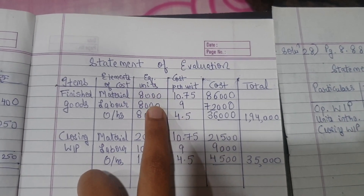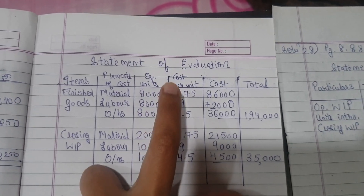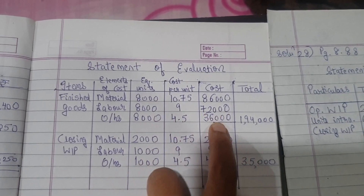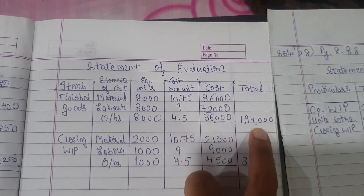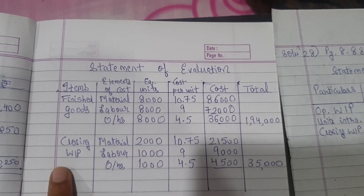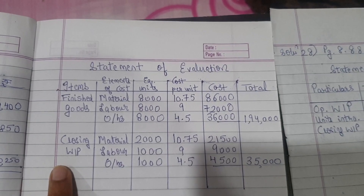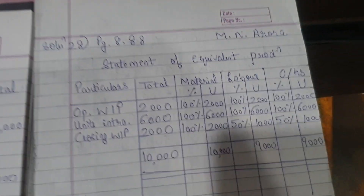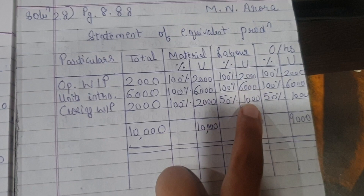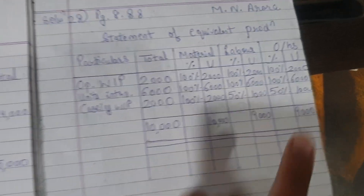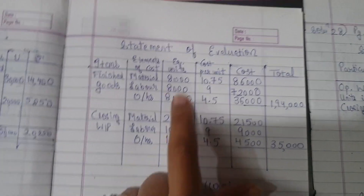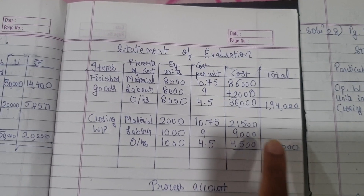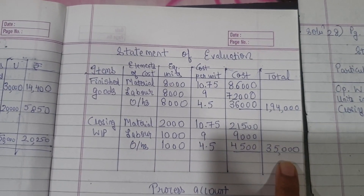The units are 8,000, 8,000, and 8,000 for the three elements. I multiplied by the cost per unit found earlier to get the total cost. For closing WIP, the equivalent units from this table are 2,000, 1,000, and 1,000 respectively. I multiplied by the cost per unit and got the total cost here.